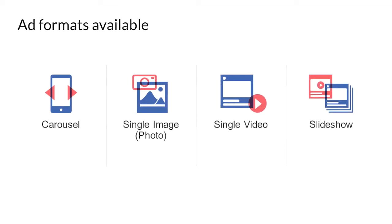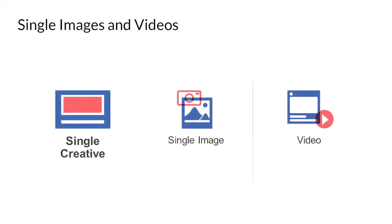There are different ad formats available on Facebook: from the carousel, which has multiple images or videos, to a single image which can be a photograph, to a single video, and a slideshow which is multiple images that play as a GIF file.